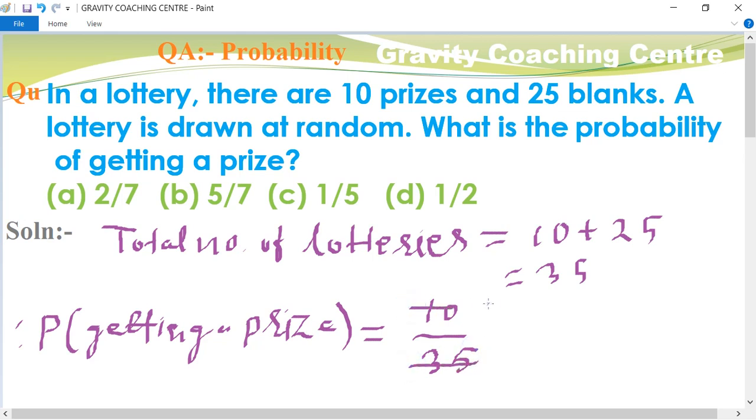So now we cancel both of them by table of 5. 5 to the 10 and 5 7 to 35. So our required answer is 2 upon 7. So option A is the right answer.